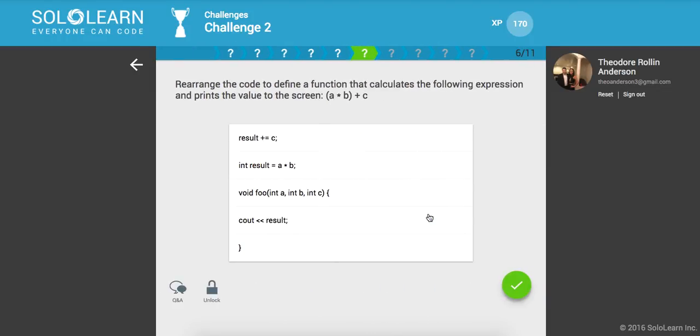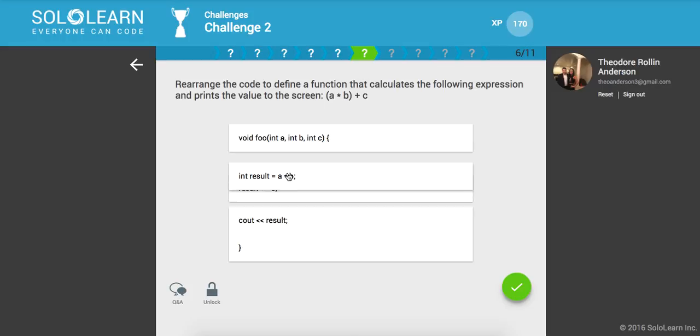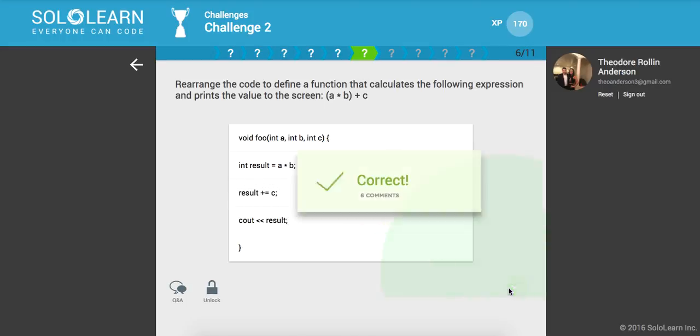So rearrange the code to define a function that calculates the following expression and prints the values to the screen. A times B plus C. So let's do void up at the top. And here we'll get this result. Okay. Collects the function expression, prints the values to the screen. Result plus C. All right. And then let's go ahead and print it out. And that should do it.